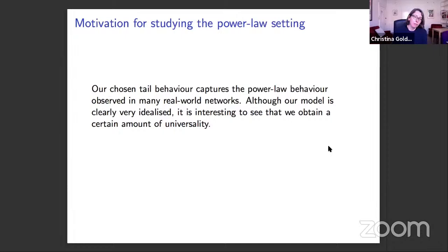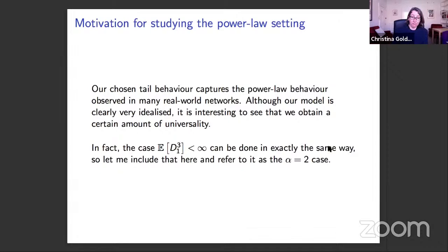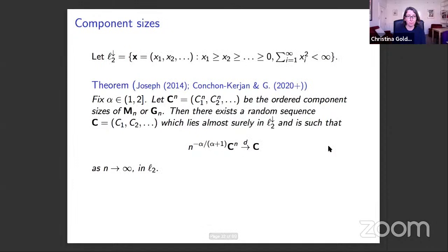The motivation for studying the power law setting: this tail behaviour matches power law behaviour observed in many real-world networks. Without claiming this model accurately captures clustering properties of social networks, it's nonetheless interesting that we obtain universality — results hold for anything in this class with the right tail behaviour. The finite third moment case can be handled in the same way, and it's convenient to refer to it as the alpha equals two case; the power law ones are alpha between one and two.